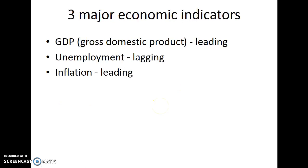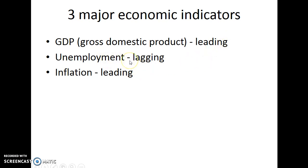The three major economic indicators are GDP, unemployment, and inflation. GDP stands for gross domestic product, and this is known as a leading economic indicator because what is happening with GDP at this time will tell us what we are leading into with the state of the economy. Unemployment is a lagging economic indicator because it is the result of what has been happening from times before. Inflation is another leading economic indicator — it is the general increase in the price level.